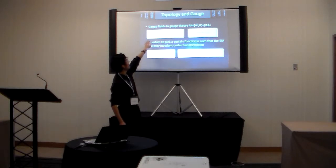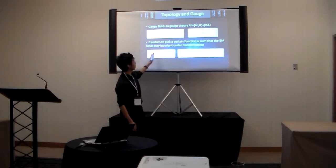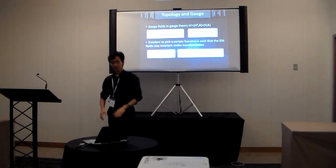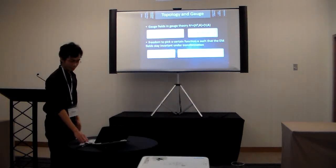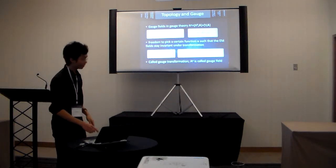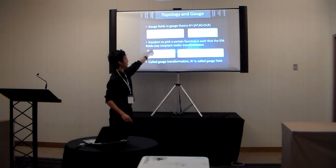And then we repeat the above calculations using A prime. It turns out that the physical field stays exactly the same. And that property is called gauge invariance, and this is called the gauge transformation.